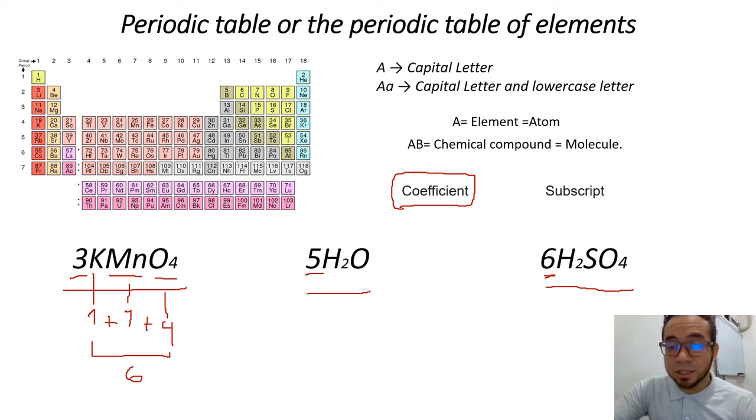But, six is not the answer. Three times six. Remember, it's a multiplication. Three times six is 18. So, the answer is, we have 18 atoms in this molecule, or we have three molecules.